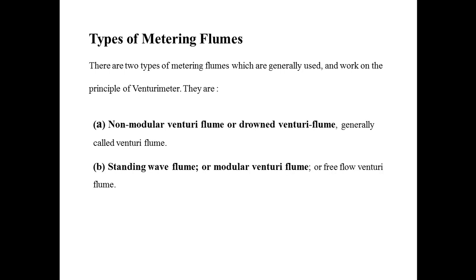There are two types of measuring flumes which are generally used and work on the principle of venturi meter. These types are: (a) non-modular venturi flume or drowned venturi flume, generally called venturi flume, and (b) standing wave flume or modular venturi flume called free flume. These are used in order to measure the discharge across the channel.